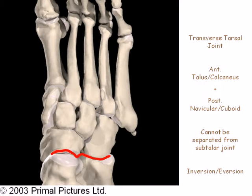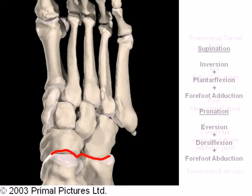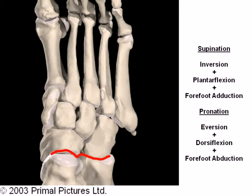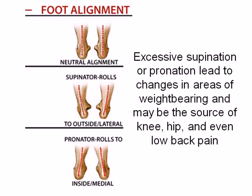Other foot motions include supination and pronation, which combine rear and forefoot motions. Excessive pronation or supination in weight-bearing may occur for a variety of reasons, including bony, ligamentous, and muscular anomalies. Since the foot is forced to weight-bear in different areas and weight is redistributed, excessive pronation and supination may cause changes all the way up the kinetic chain.